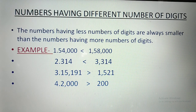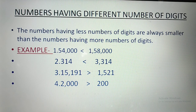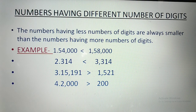This is very easy. To compare two numbers, the number with more digits will be the bigger number. For example, 54,000 and 1,58,000 — obviously 1,58,000 has more digits, so that number is bigger.